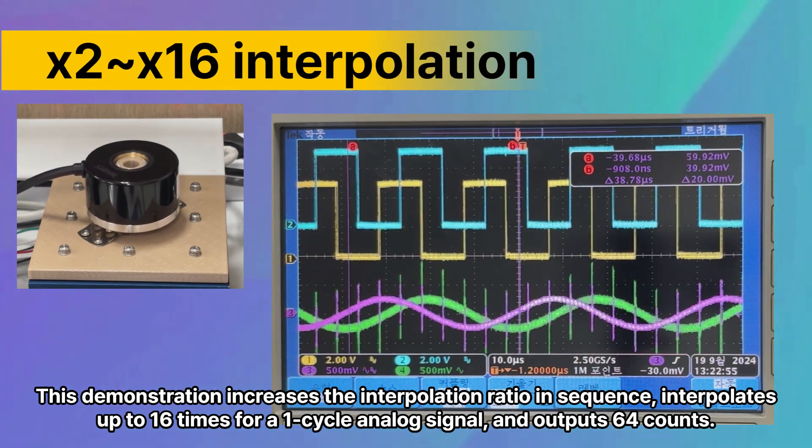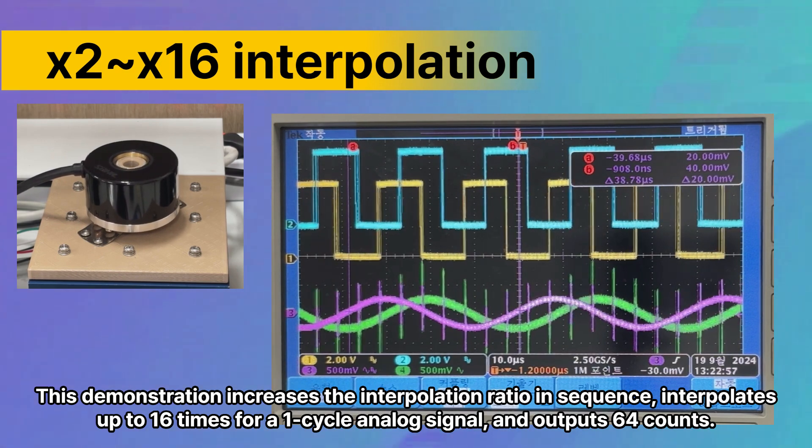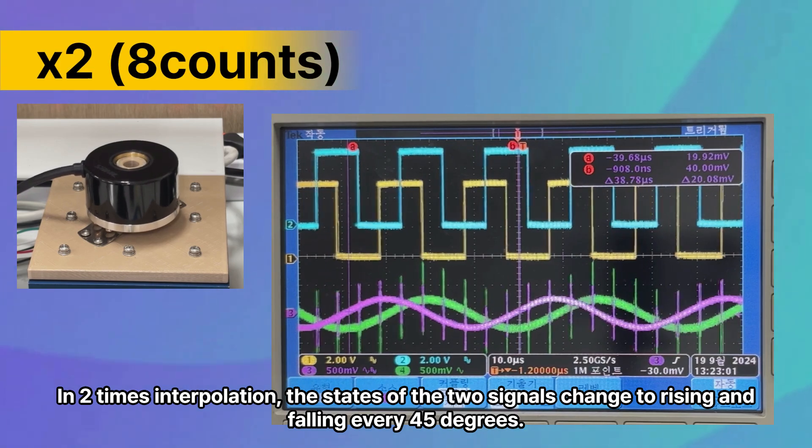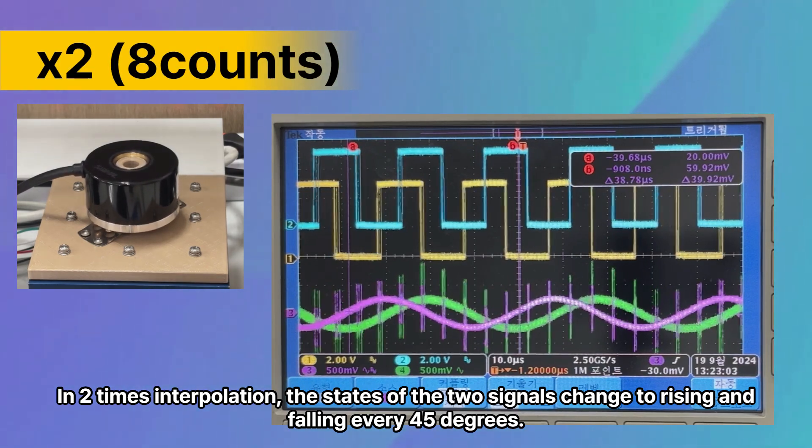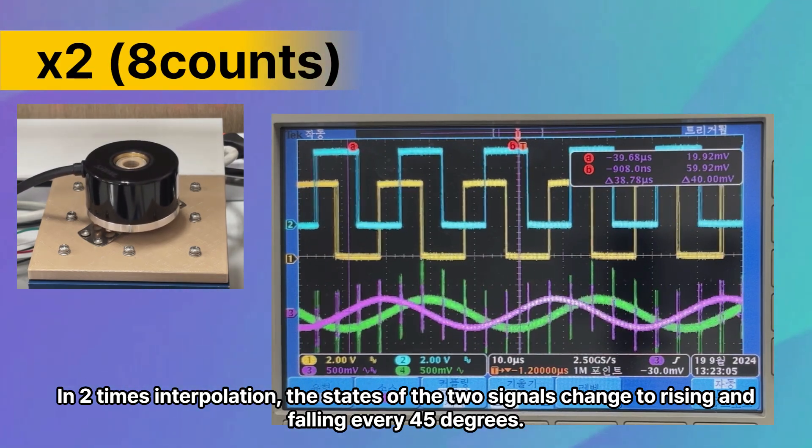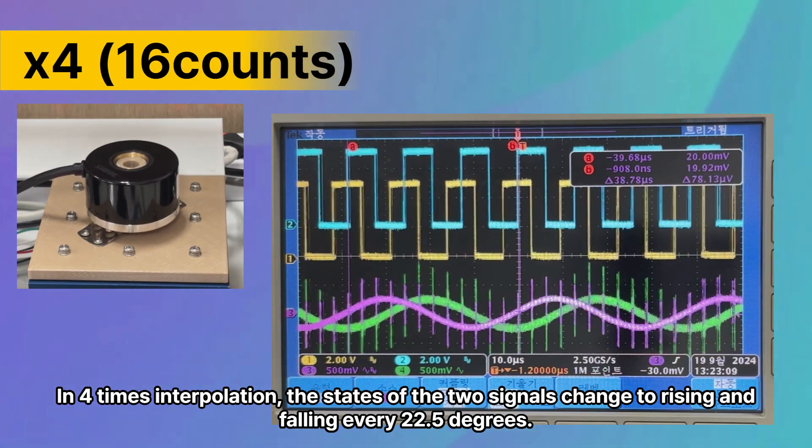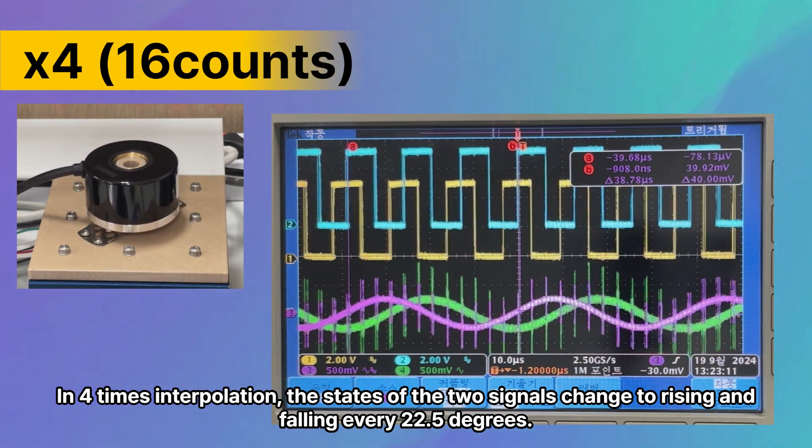This demonstration increases the interpolation ratio in sequence, interpolates up to 16 times for a one-cycle analog signal, and outputs 64 counts. In two-times interpolation, the states of the two signals change to rising and falling every 45 degrees. In four-times interpolation, the states of the two signals change to rising and falling every 22.5 degrees.